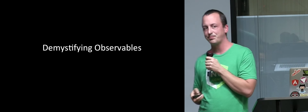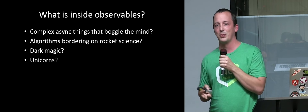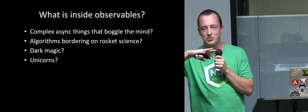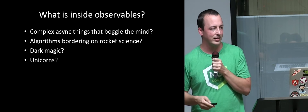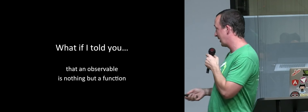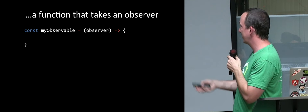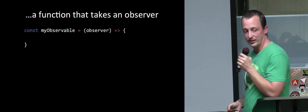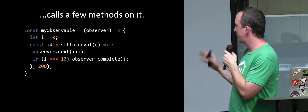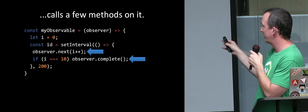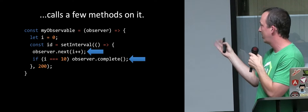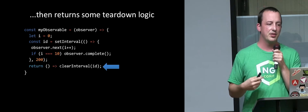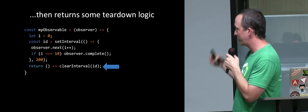I want to demystify observables a little bit. A lot of people look at an observable and it seems really advanced — dark magic, unicorns. Is there some sort of crazy logic happening inside this observable type? No, not really. An observable is really nothing but a function, and I'm going to set out to prove that. If you have a function that takes an observer — and an observer is a plain object that has a next method, an error method, and a complete method — inside of it, it calls some methods on it.